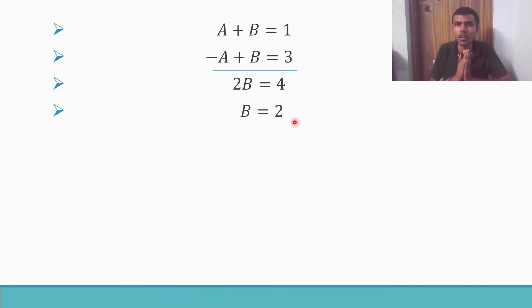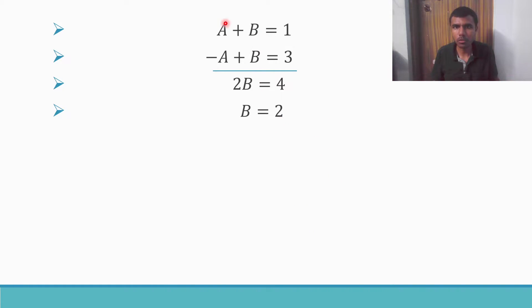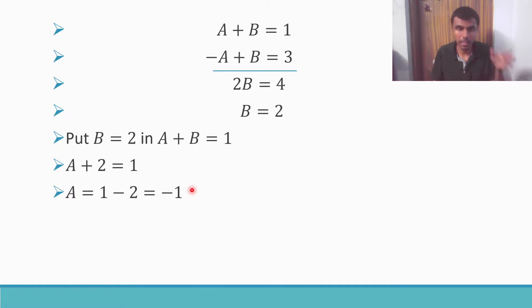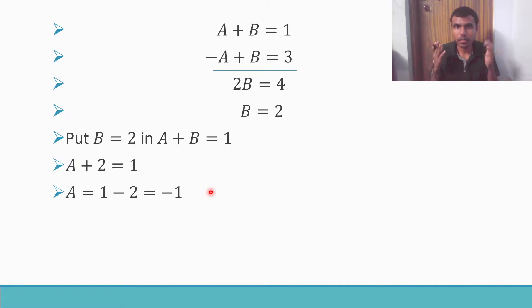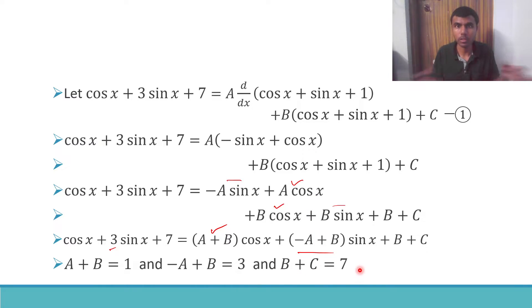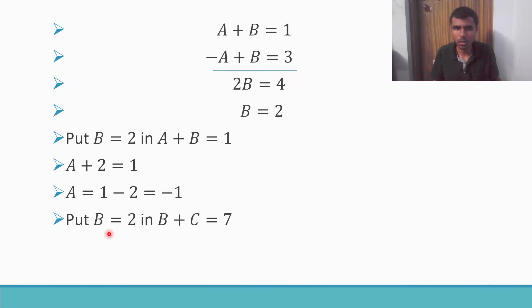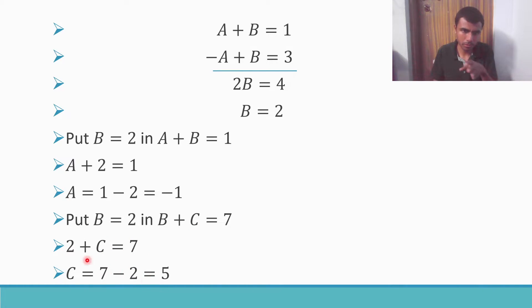B equals 2. To find a, put b = 2 in the equation a + b = 1. So a + 2 = 1, a = 1 minus 2, which is minus 1. Now to find c, use the third equation b + c = 7. Put b = 2: 2 + c = 7, so c = 7 minus 2, which is 5.